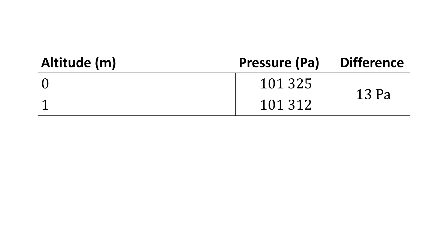So it seems like the space pizza aficionados are correct. But what happens if we measure the air pressure at sea level? At an altitude of zero meters, we get 101,325 Pascal. But when we measure it one meter above sea level, we get 101,312 Pascal.